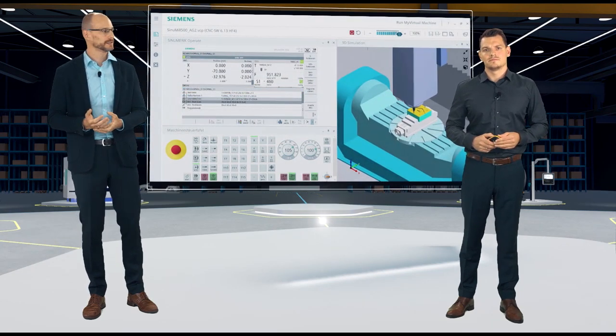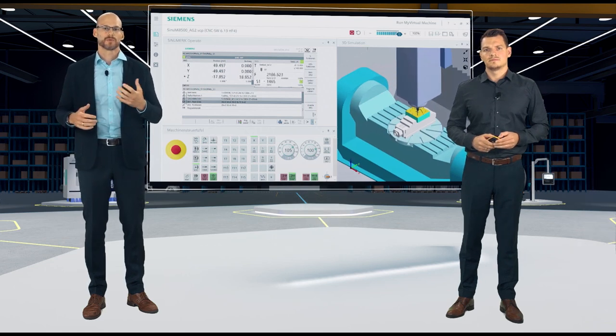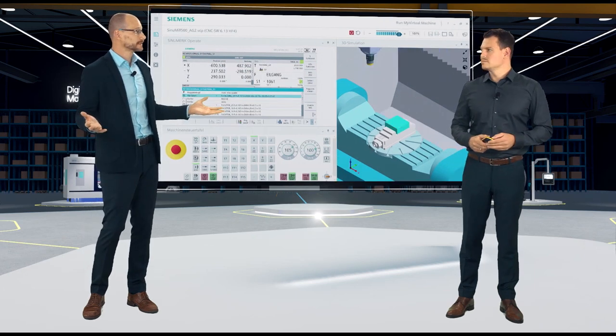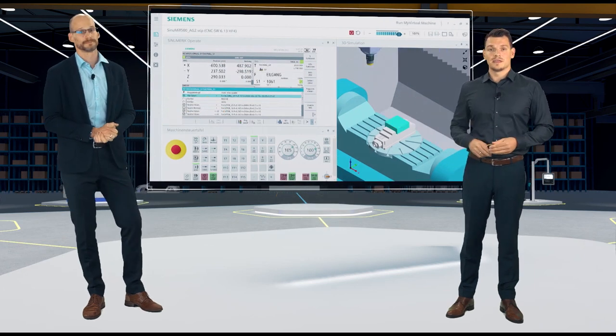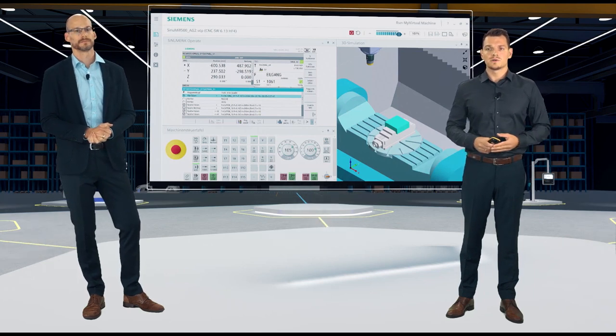So, you can quickly and easily check your machine movements without clamps, tools, fixtures. Impressive, isn't it? It is. Definitely, you not only have the digital twin of CNC, but also of your workspace.